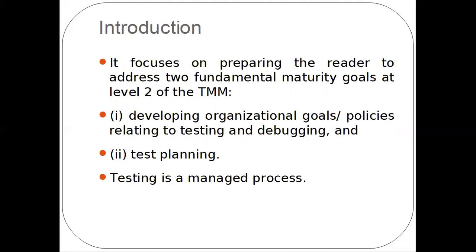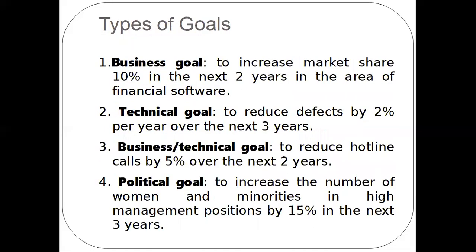First we will see organizational goals and policies related to testing and debugging. Before going into debugging and testing, we should ensure we understand the goals. There are four types of goals: business goal, technical goal, business or technical goal combined, and political goal. A business goal addresses how market share can be increased by a certain percentage over the next two or three years. A technical goal aims to reduce defects by some percentage. The combined goal is to reduce support calls after delivery by a certain percentage. A political goal is to increase management buy-in by a certain percentage.